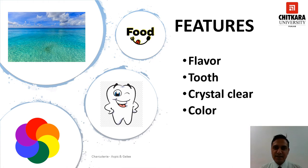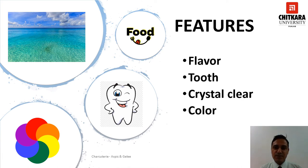Once you have learned about the preparation of aspic jelly, you must also understand the parameters on which it is graded. Aspic jelly can be graded on the following parameters: flavor, tooth, clarity and color. The flavor of an aspic jelly should be intense enough to make the mouth water, yet it should not be so strong as to overpower the flavor of the main ingredients of the product.